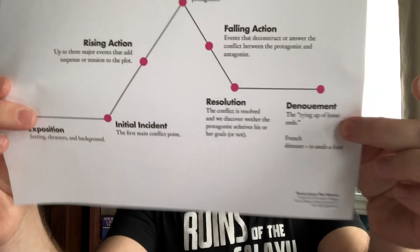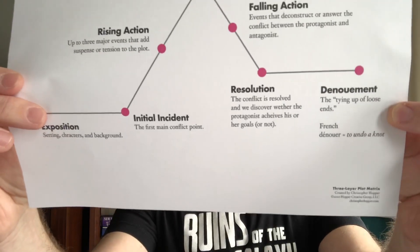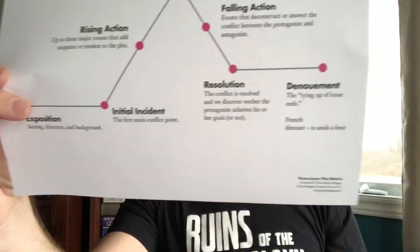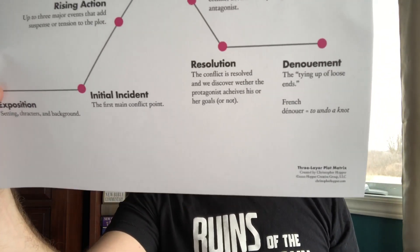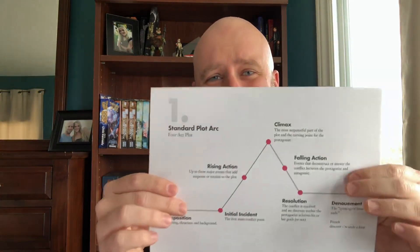The final part is the denouement, which is the tying up of loose ends. It comes from the French word 'denouer,' which means to undo a knot. So we're taking this big jumble of mess of strings and wires and laying it all out, smoothing it out to bring a sense of catharsis to the reader. That's the first layer of the matrix.